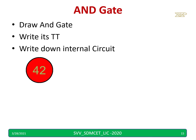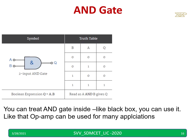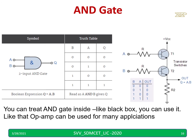Just as you can write an AND gate symbol and use it in larger circuits without knowing its internal circuit — treating it as a black box — similarly, you can treat the op amp symbol as a black box. Even if you cannot remember the number of transistors or their connections inside the op amp, you can simply use it as a black box for different applications. Op amp internal circuit diagrams are difficult to remember, but don't worry — just remember the symbol.